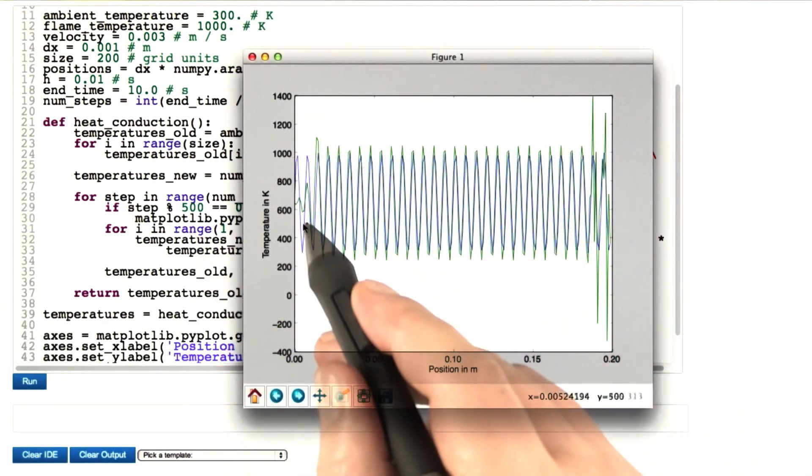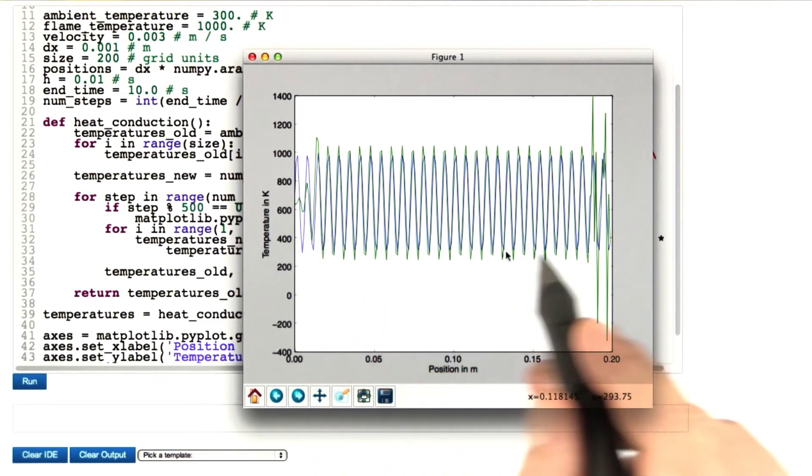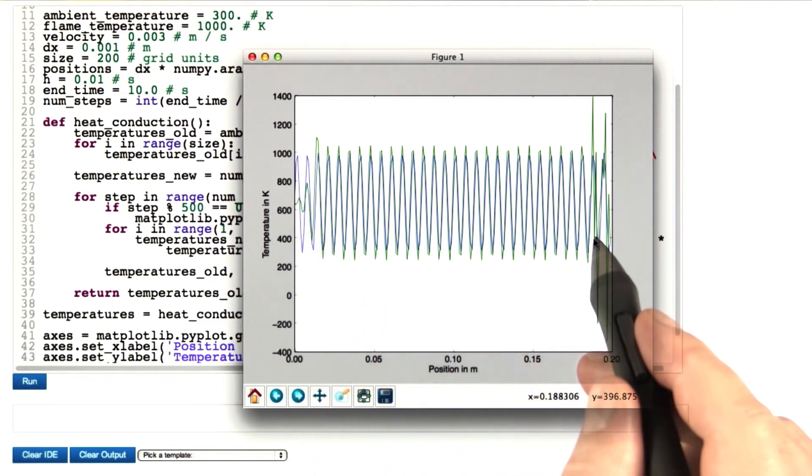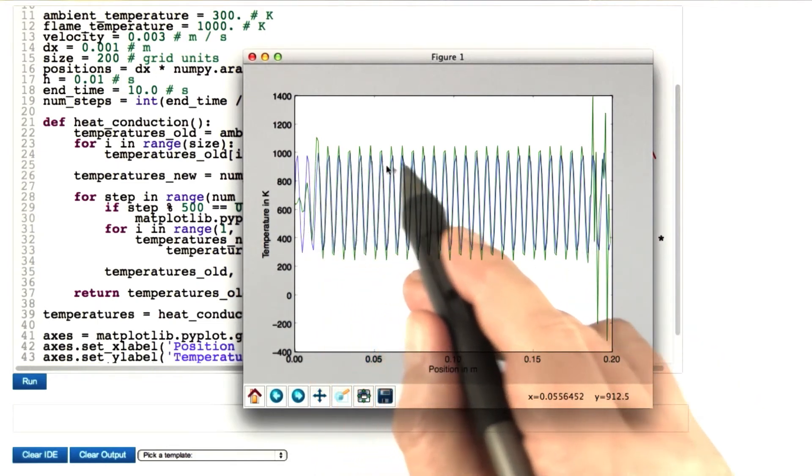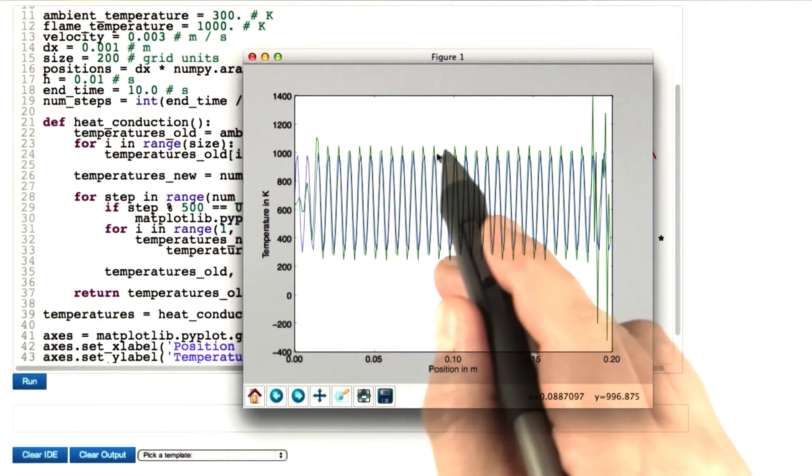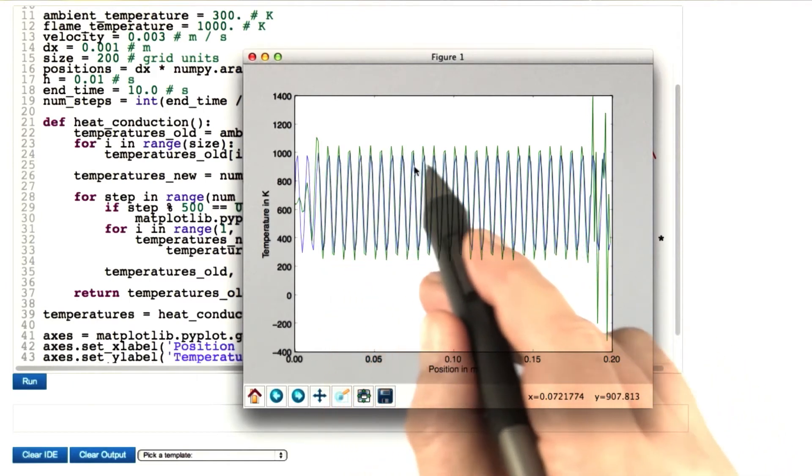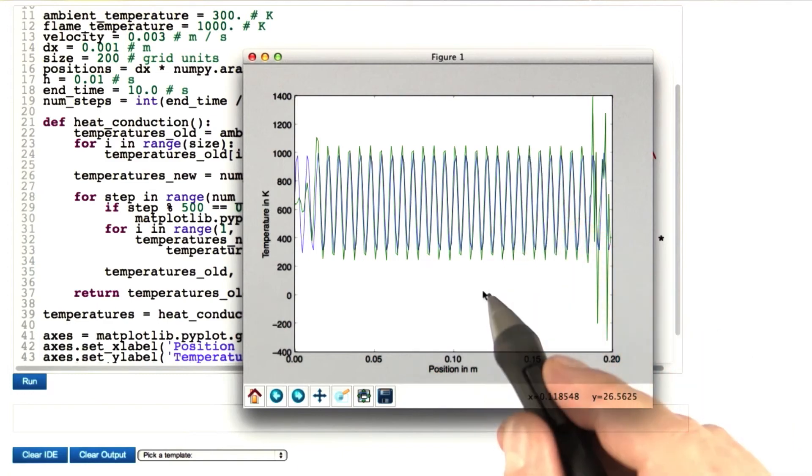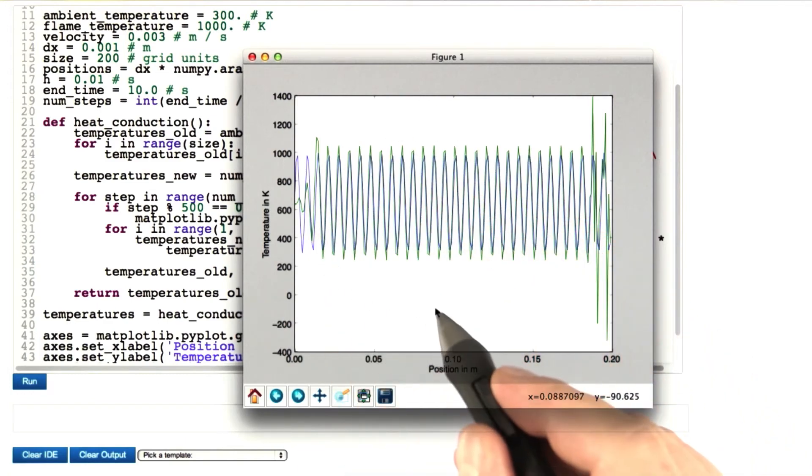This is the result that we get. You can see the artifacts at the boundaries, which we already know, but there's a second phenomenon. We can see that the amplitude is slightly growing. We're going from the blue curve to the green curve, so this looks unstable. The higher the frequency that we feed in, the more unstable this becomes.